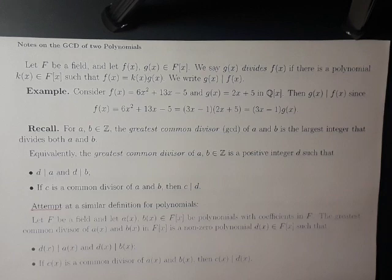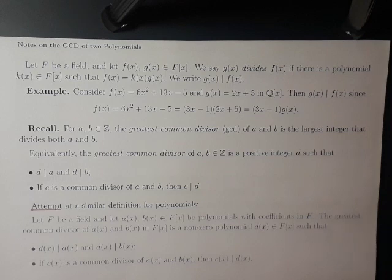So now we're ready to define the greatest common divisor of two polynomials. Recall that if a and b are integers, not both 0, the greatest common divisor of a and b is the largest integer that divides both a and b, or equivalently, the GCD of a and b is a positive integer d such that d divides a and d divides b, and if c is any common divisor of a and b, then c divides d.